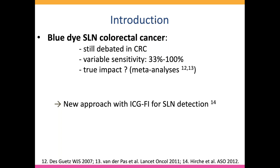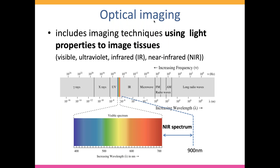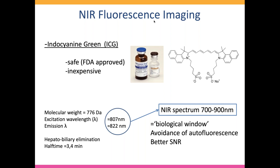More recently, ICG fluorescence imaging has been reported in several cancers and also reported in colorectal cancer. Fluorescence imaging belongs to optical imaging, defined as an imaging technique using the light properties to image a tissue. When we speak about ICG fluorescence imaging, it means we use the near-infrared light spectrum — a wavelength of 700 to 900 nanometers.